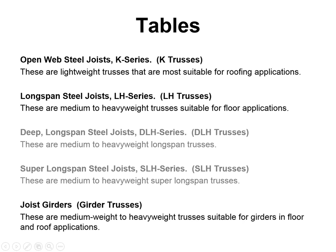Finally, there's what they call joist girders — I'm going to call them girder trusses. So: K-series open web steel joists I'll call K trusses; LH series I'll call LH trusses; and joist girders I'll call girder trusses. These are medium weight to heavyweight trusses suitable for girders or primary trusses in floor and roof applications.